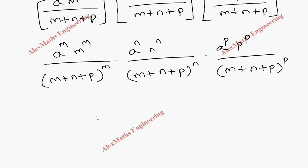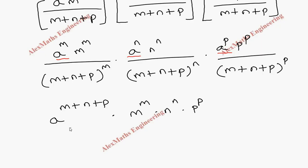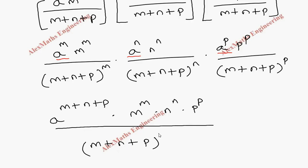In the numerator, a^m · a^n · a^p = a^(m+n+p). In the denominator, (m+n+p)^m · (m+n+p)^n · (m+n+p)^p = (m+n+p)^(m+n+p). So the maximum value is a^(m+n+p) · m^m · n^n · p^p / (m+n+p)^(m+n+p).